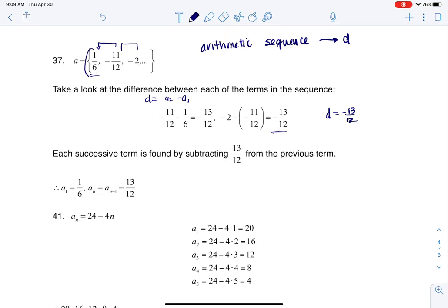And that's all you need. So here's your starting point. I'm going to say my starting point is 1 sixth, and then my current term is my previous term minus 13 over 12, and that is a recursive sequence, and that's what you see me writing there. All right, thanks so much, bye.